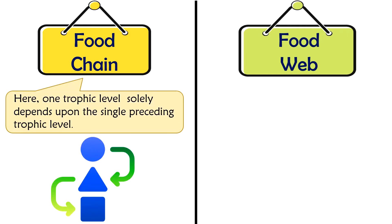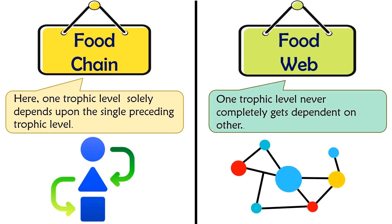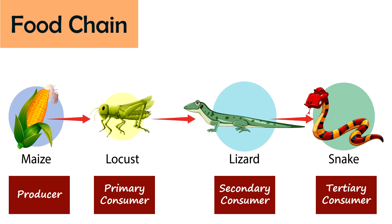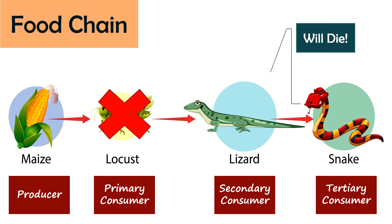In a food chain, the organisms of one trophic level solely depend upon the organisms of the preceding trophic level for their food requirements. Usually, members of higher trophic levels solely depend on or feed upon a single type of organism present in the lower trophic level. That means every particular organism has its specified consumer. And if we eliminate one of the intermediate organisms, the upper trophic level will die automatically. This might disturb the whole energy flow. In this way, the food chain increases the chances of instability in the environment.